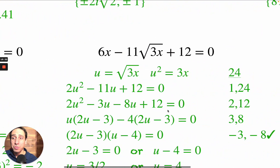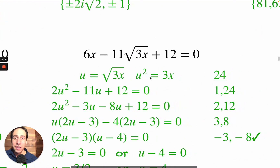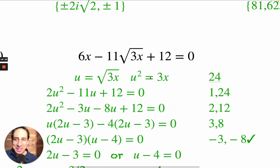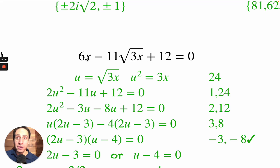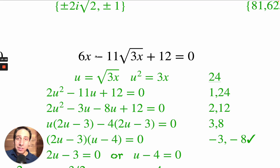Square roots in the exponents? Bergman, I didn't sign up for square roots. It's okay — we can do this. It's a trinomial. The exponent on the first term is 1, and the middle exponent is one-half, so 1 is double one-half. We can use u-substitution. U equals the square root of 3x.